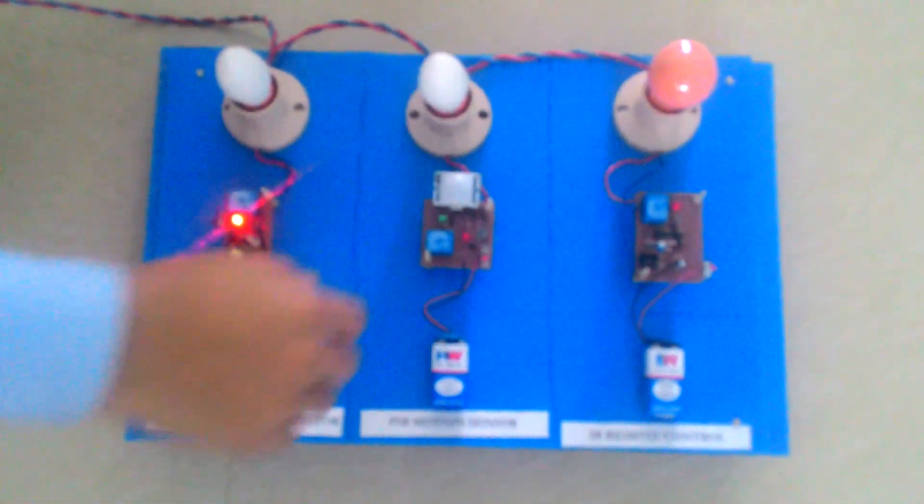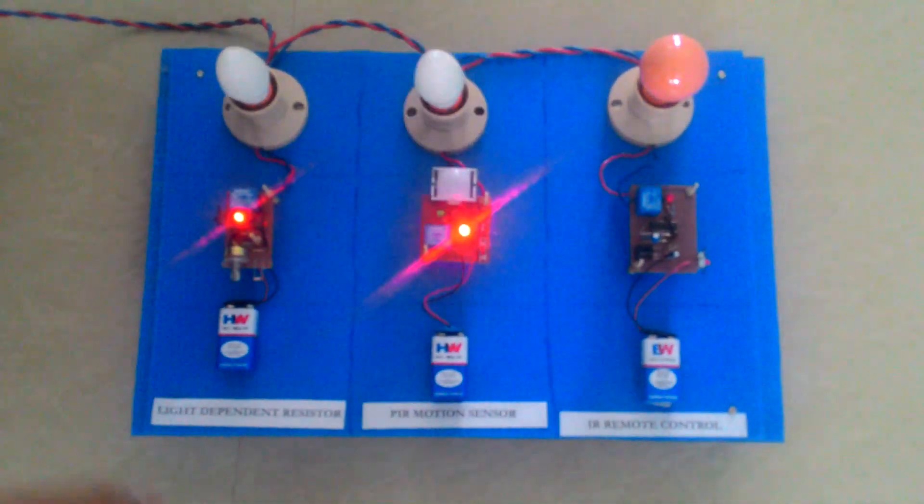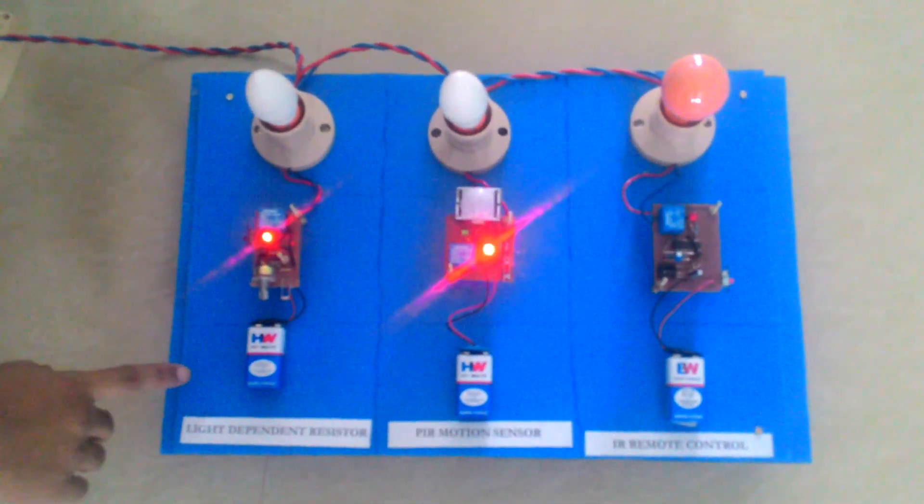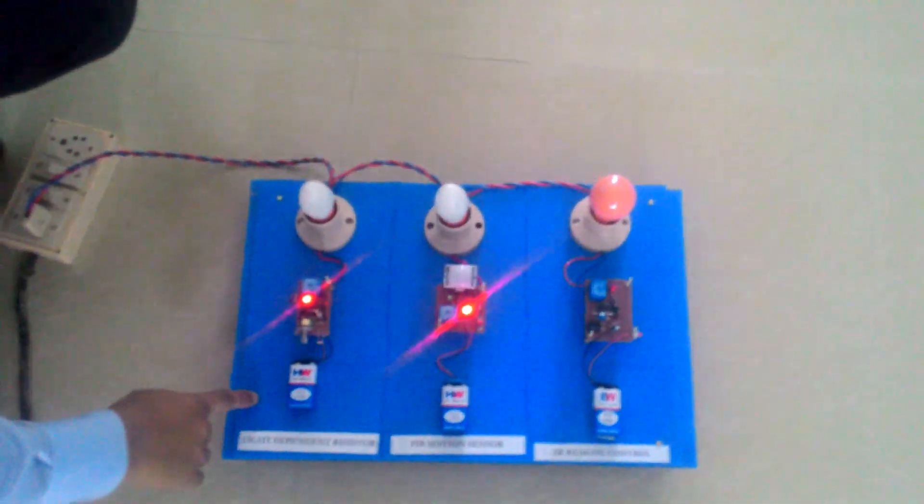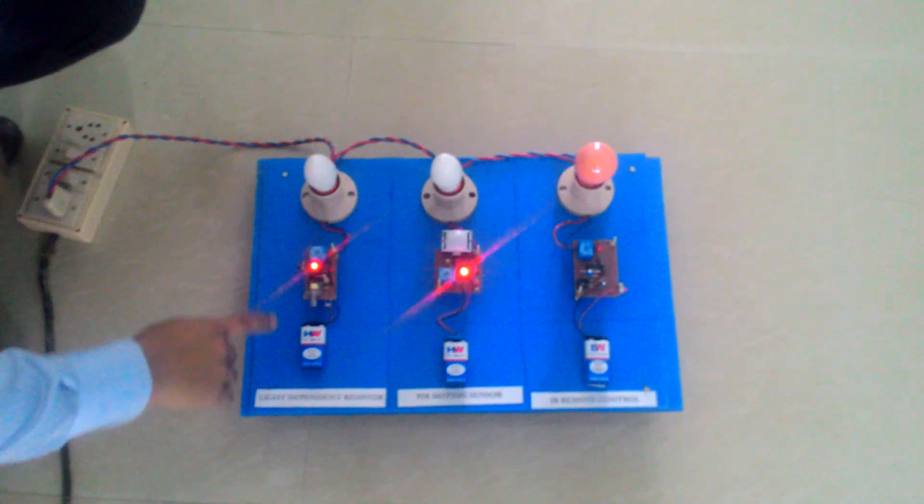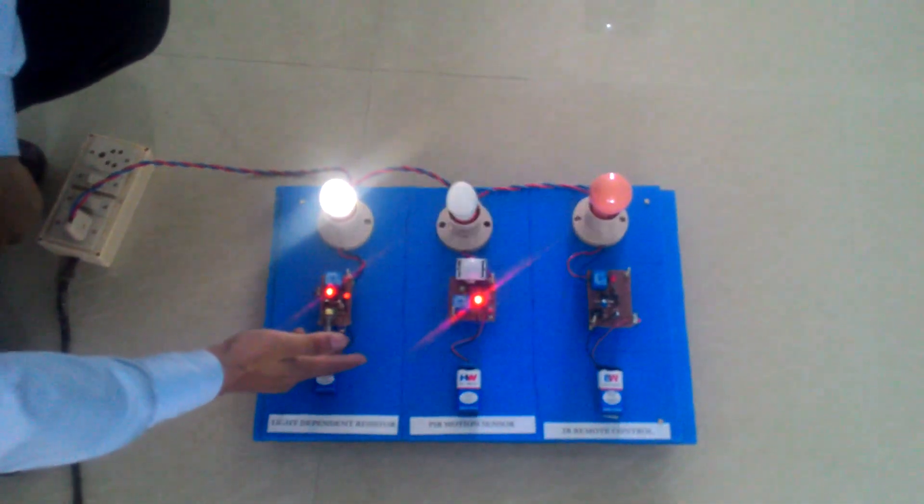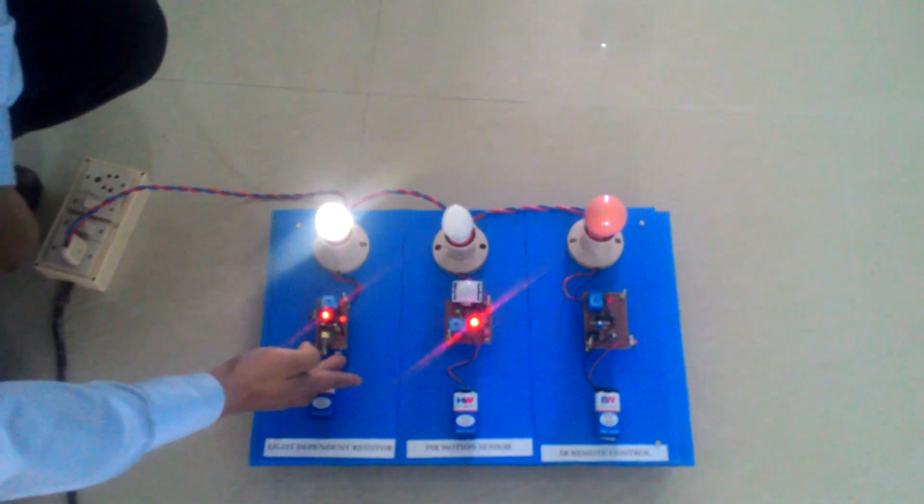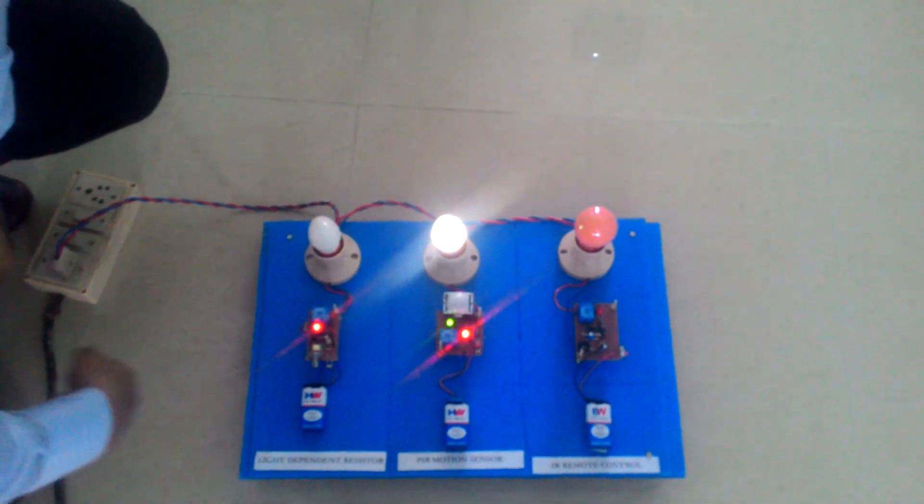Right now I'm switching on each of the circuits. The first one is the light-dependent resistor. In this case, the switching of the lamp will depend on the amount of light received by the LDR. So when I blow upon the LDR sensor, it will switch on. But when light falls on the LDR, it will switch off.